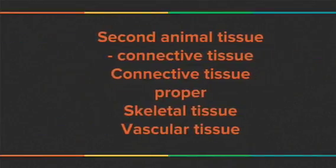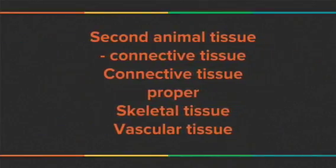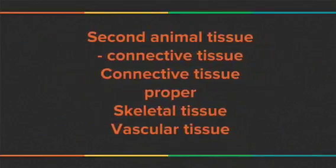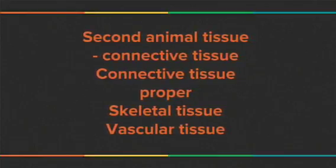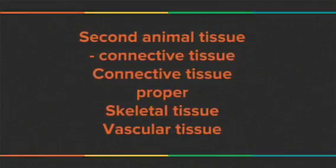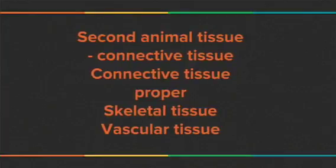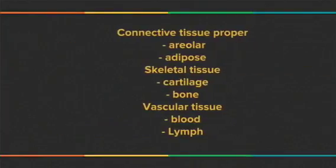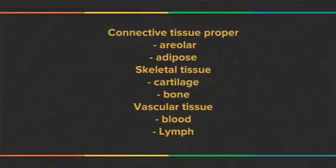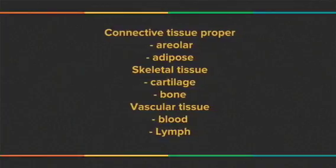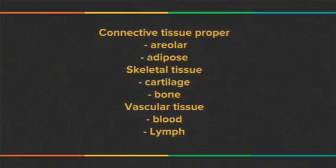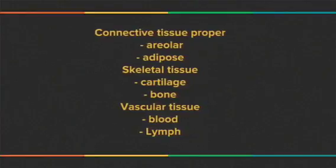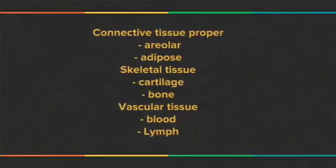The second animal tissue is connective tissue. Connective tissue is of three types: connective tissue proper, skeletal tissue, and vascular tissue. Connective tissue proper is of two types: areolar and adipose. Skeletal tissue is of two types: cartilage and bone. Vascular tissue is of two types: blood and lymph.